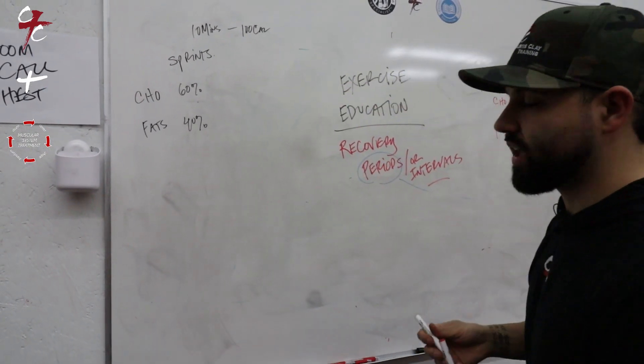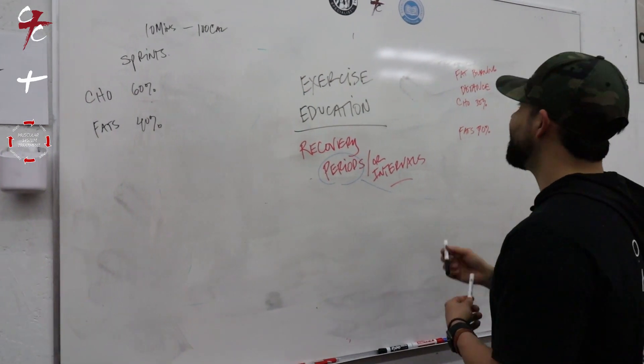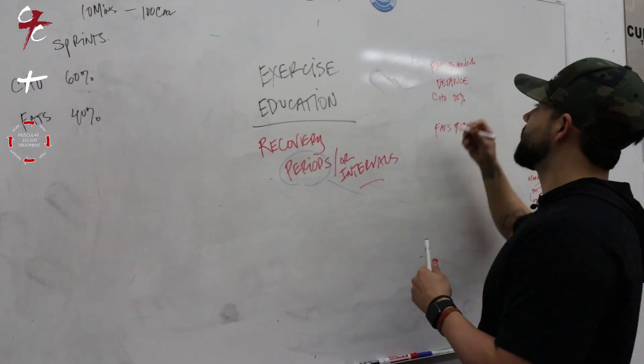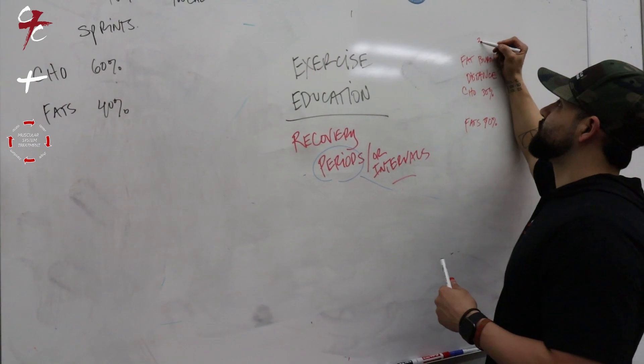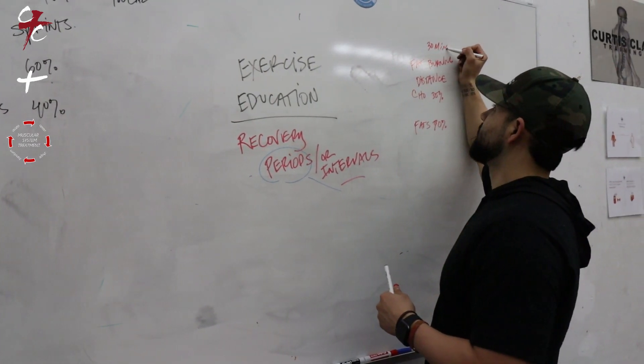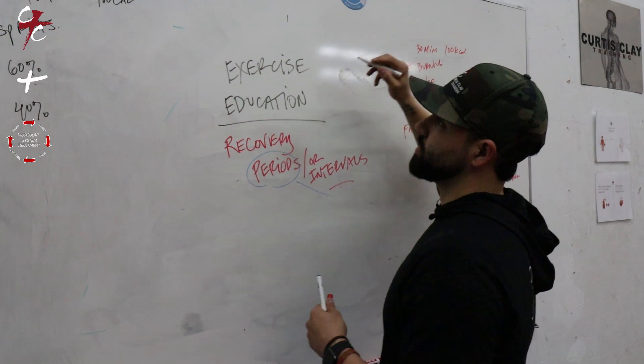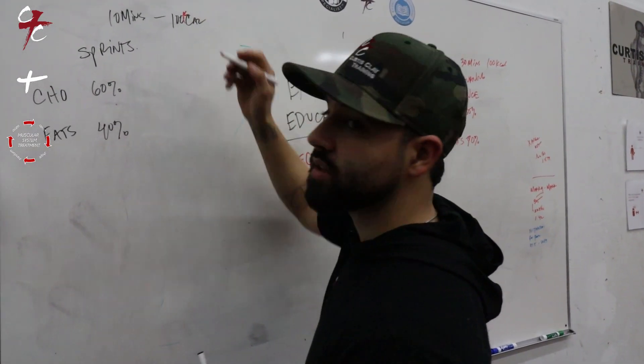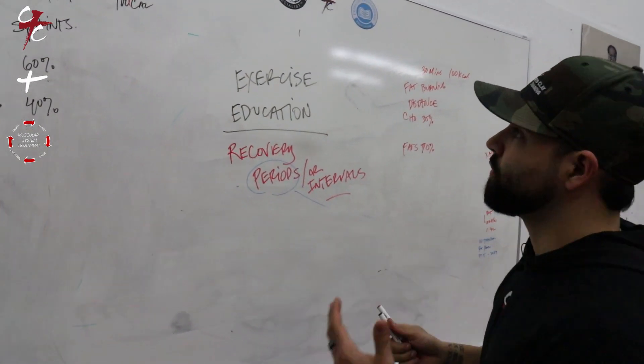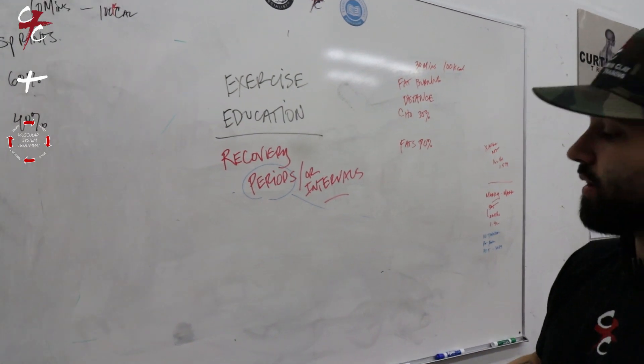Say for example I do sprints for ten minutes to burn one hundred kilocalories, and over here I'm doing distance running for thirty minutes to burn one hundred kilocalories. Let's do the math on that.